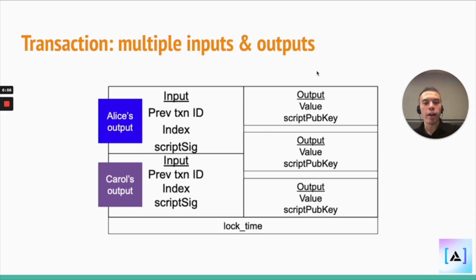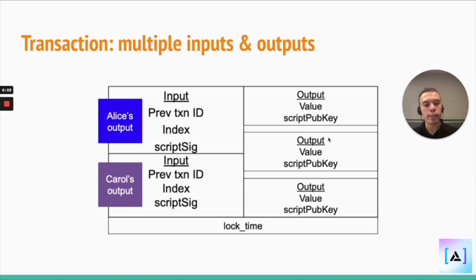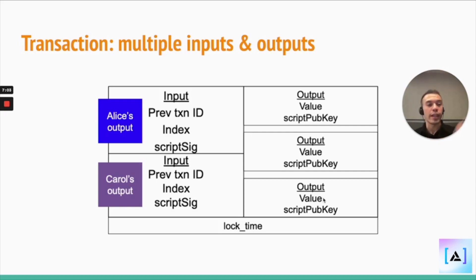So if I'm buying a car, one of these outputs would be the car dealership, one of these outputs is probably change back to myself, and one of these outputs is gas fees or miner fees.